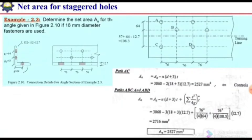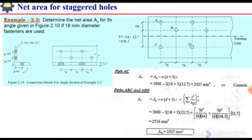We will solve one example to calculate the net area for structural shapes like angle section and channel section if the holes are staggered in the two legs. We need to determine the net area for the given angle section. 18 millimeter diameter fasteners are used. On one leg we have one bolt and on the other leg we have two bolts.